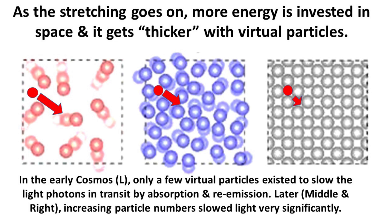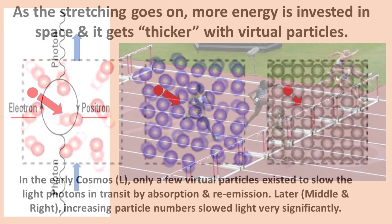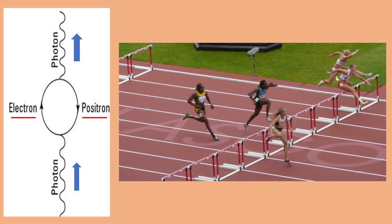In the early cosmos, as shown on the left, only a few virtual particles existed to slow the light photons in transit by absorption and re-emission. Later, on the middle and on the right, increasing particle numbers slowed light photons significantly. While they exist, virtual particle pairs, underlined in red on the left, are able to absorb a travelling photon of light, the blue arrow on the left. However, the moment they slam back together, that photon is re-emitted and goes on its way, until it hits another virtual particle. So the progress of light through space is like a runner going over hurdles. The more hurdles to jump, the longer the run time in the race. The more virtual particles in its path, the longer it takes the photon to travel the distance to the observer.